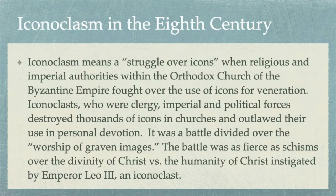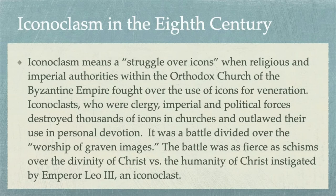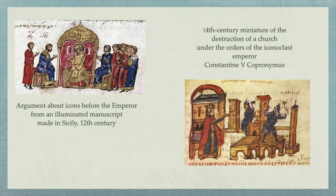Iconoclasm refers to a struggle over the use of icons. In the 8th century, religious and imperial authorities within the Orthodox Church debated and fought over the use of icons for veneration. Iconoclasts, who were clergy and political forces, destroyed thousands of icons in churches and outlawed their use in personal devotion. It was a battle over the worship of graven images, as fierce as schisms over the divinity versus the humanity of Christ, instigated by Emperor Leo III, an iconoclast. Shown in illuminated manuscripts on the left is an argument about icons, and on the right, the destruction of a church under orders of the iconoclast emperor.